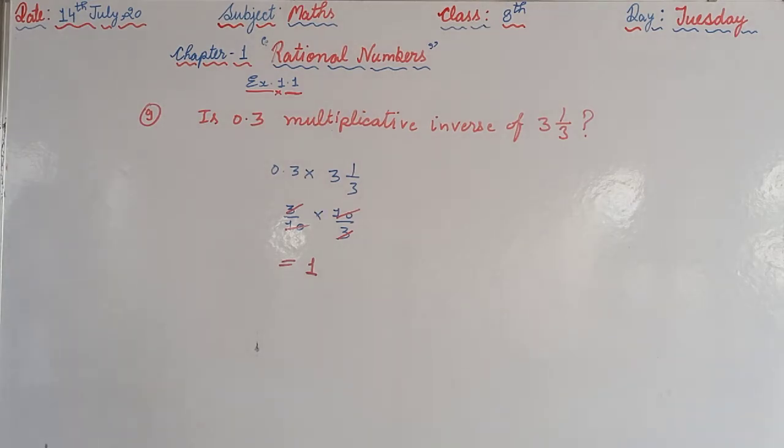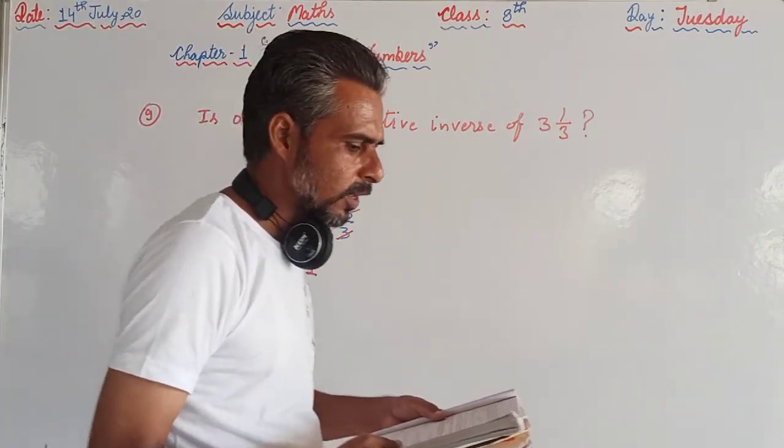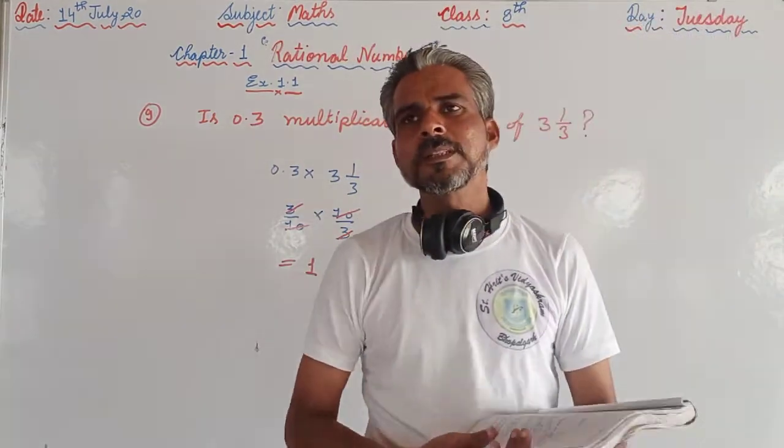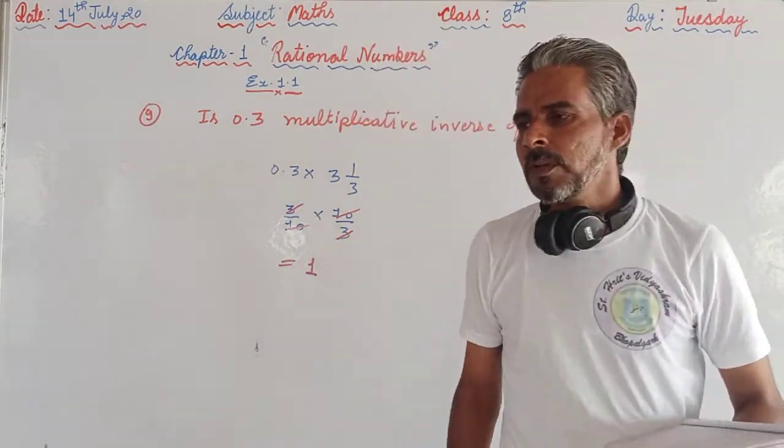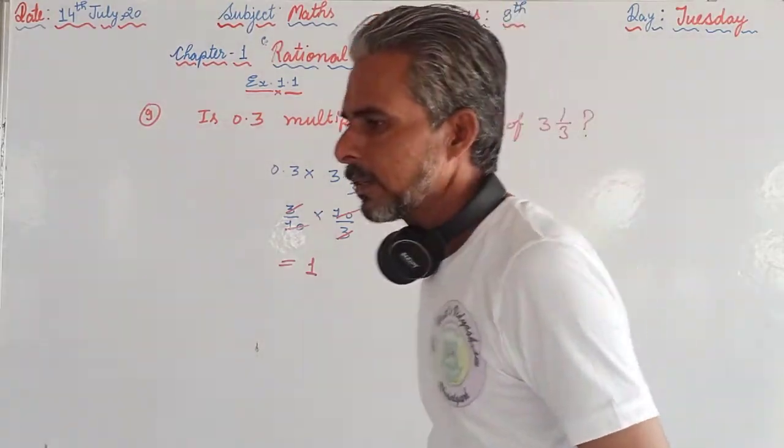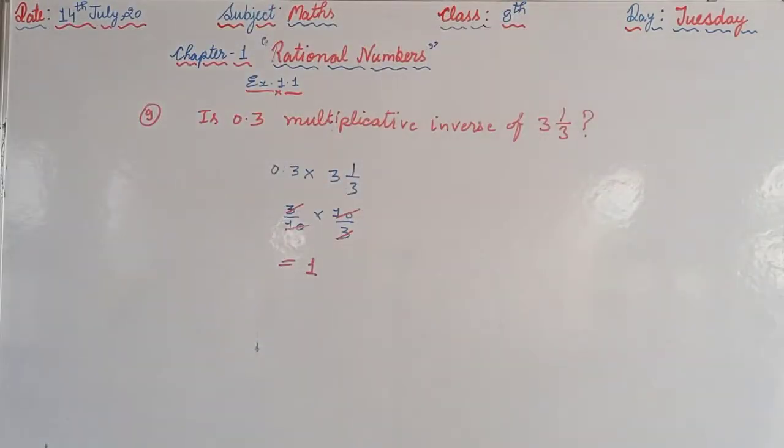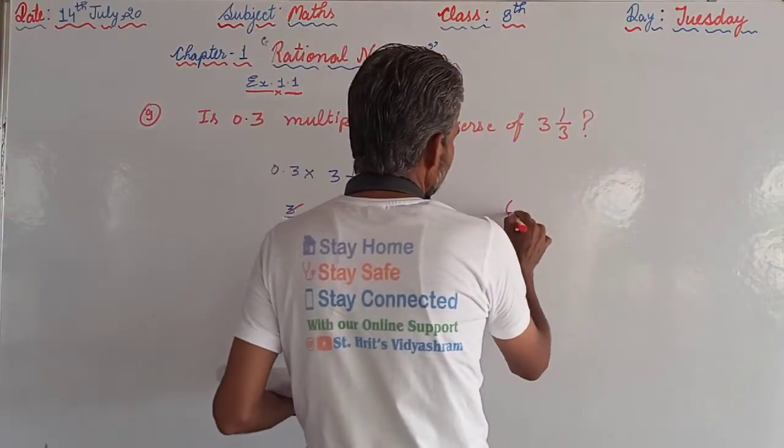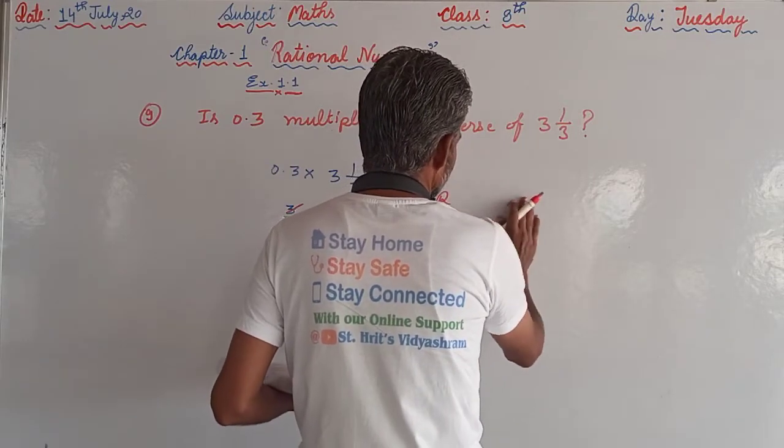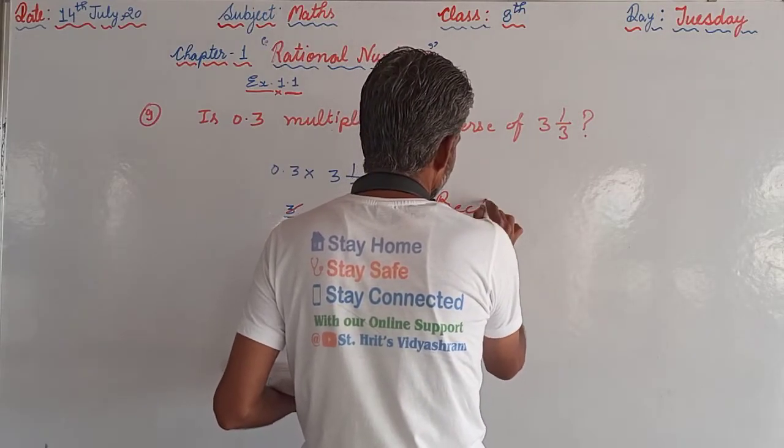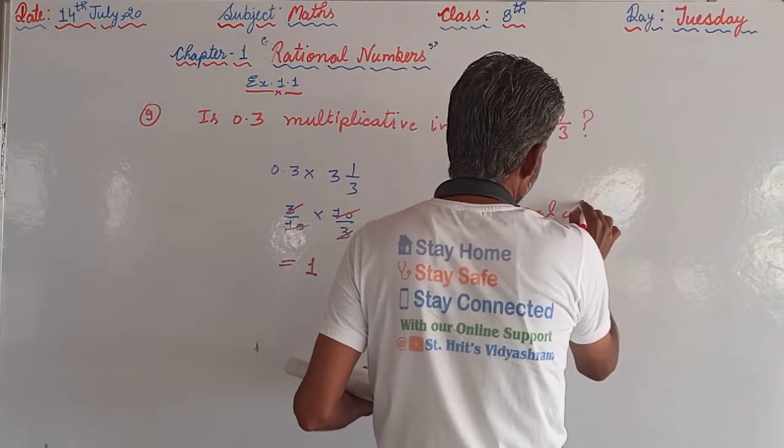Next is: we can describe that actually there is no need to solve that. The rational number that does not have any reciprocal, that is 0. Because what is the reciprocal of 0? How to find a reciprocal of 0?